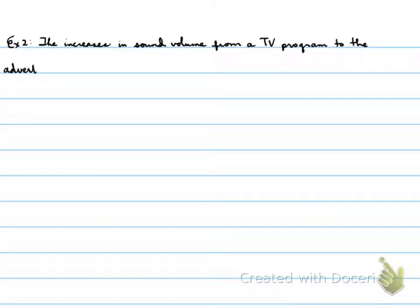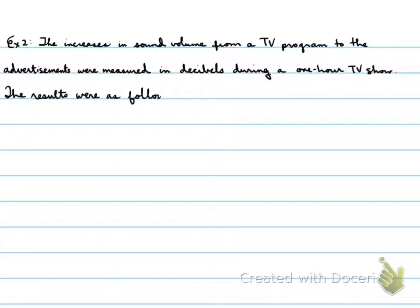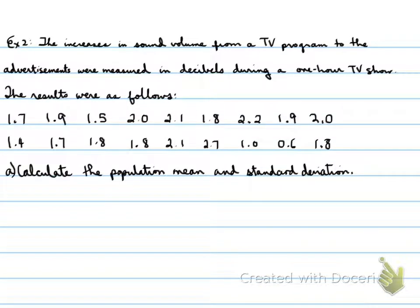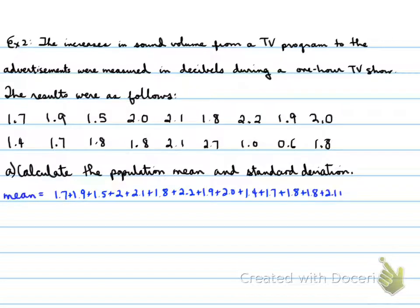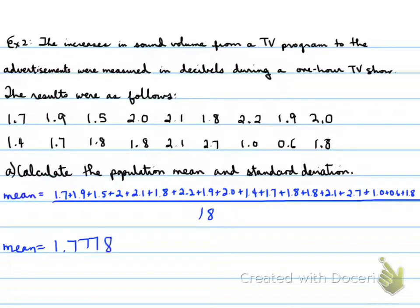Example 2: the increases in sound volume from a TV program to advertisements were measured in decibels during a one-hour TV show. Calculate the population mean and standard deviation. Since this covers all commercials from that TV program, it represents the population. The mean is calculated by summing all values and dividing by 18, which gives 1.7778.